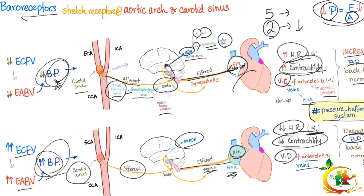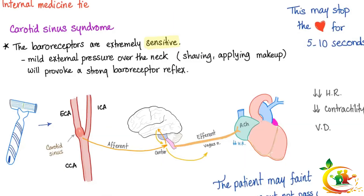That's why baroreceptors are called the pressure buffer system. Clinical integration: carotid sinus syndrome. These patients have extremely sensitive baroreceptors — mild external pressure over the neck, such as shaving or applying makeup, provokes a strong baroreceptor reflex interpreted as an extreme increase in blood pressure. The vagus nerve fires, decreasing heart rate and contractility and causing vasodilation. It can actually stop the heart for 5–10 seconds, causing the patient to faint. It's very dangerous.